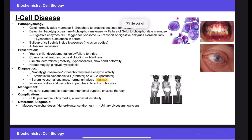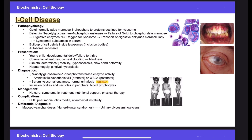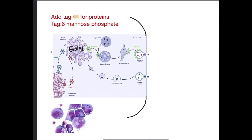Welcome to this video on I-Cell disease. I-Cell disease, or inclusion cell disease, is the inability of the cell to send digestive enzymes and other proteins to lysosomes. This results in a big buildup of residues inside the cell. Normally, the Golgi apparatus tags proteins and digestive enzymes that are sent to the lysosome by adding mannose-6-phosphate.